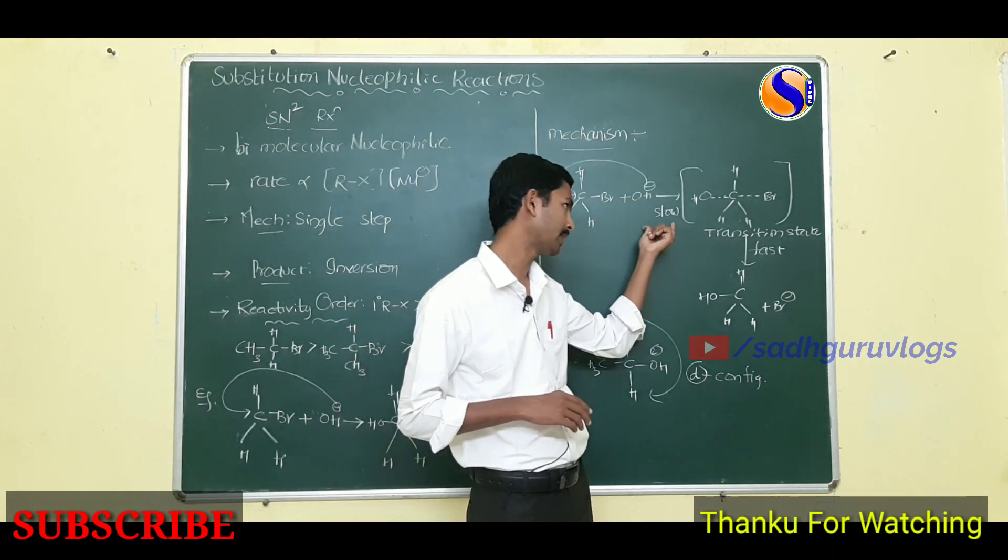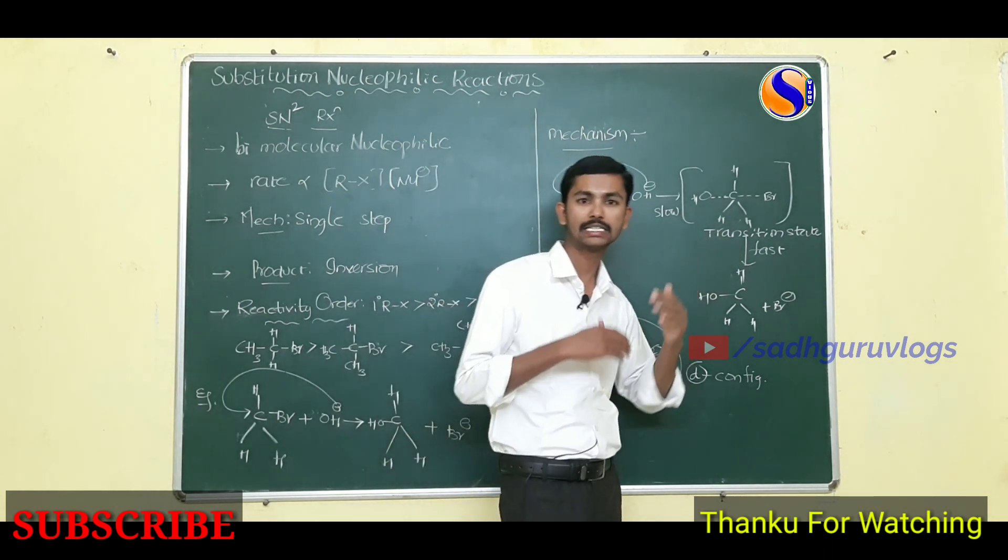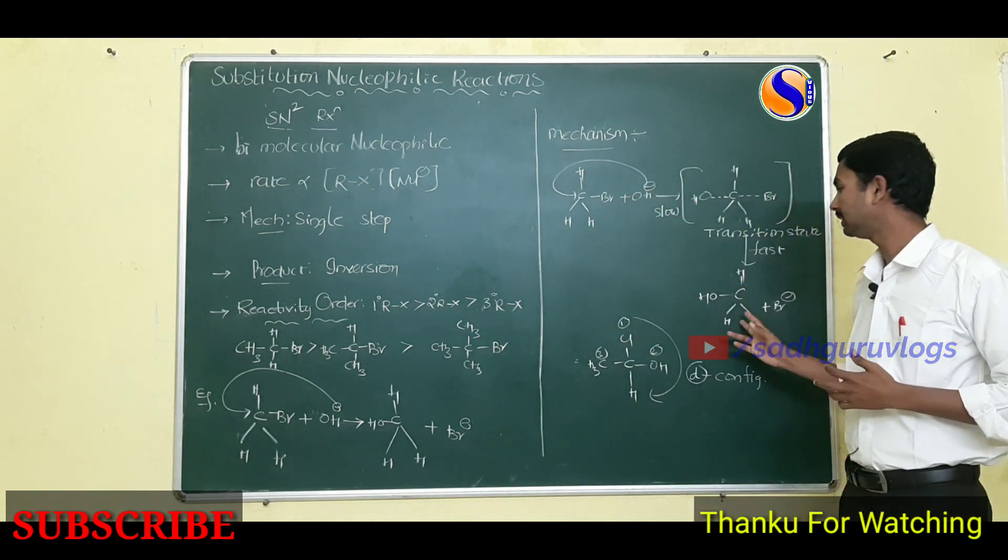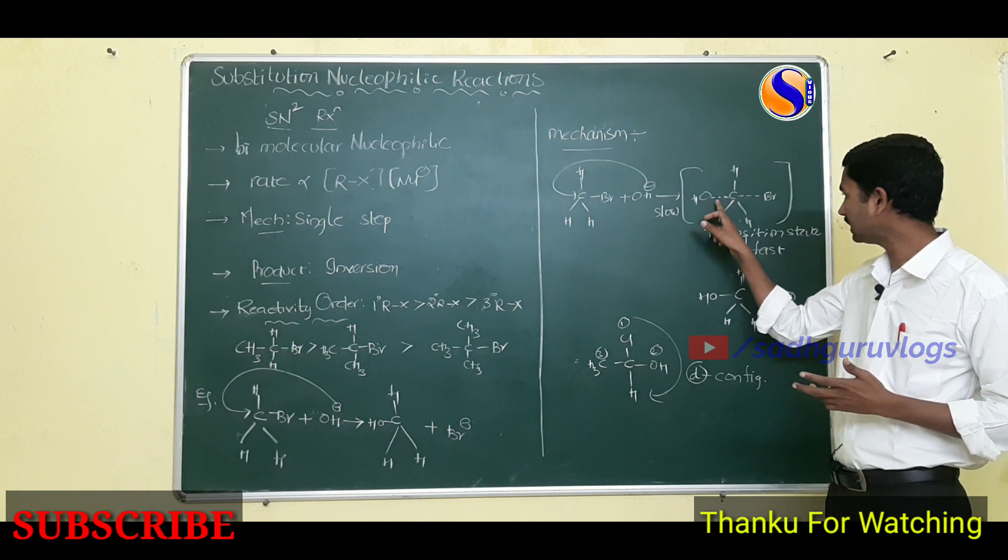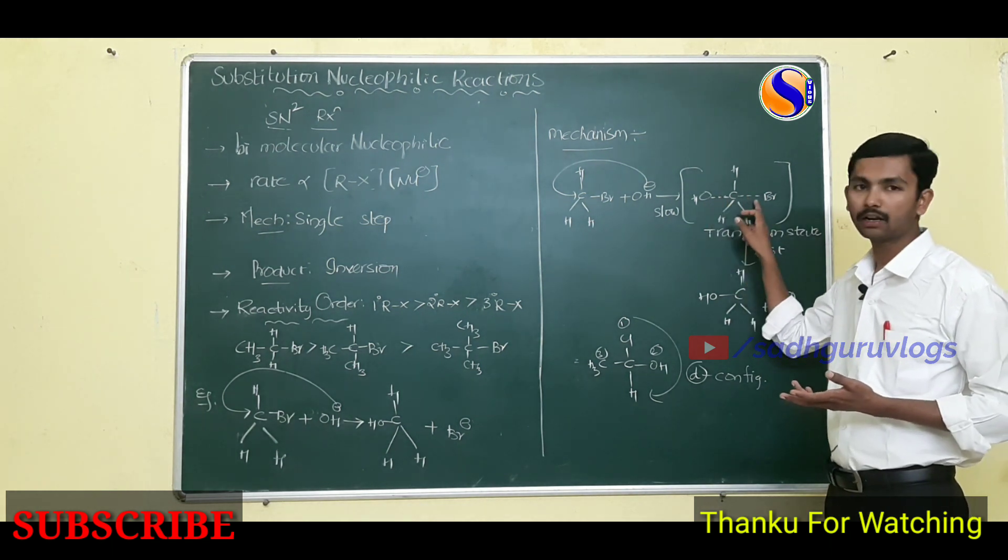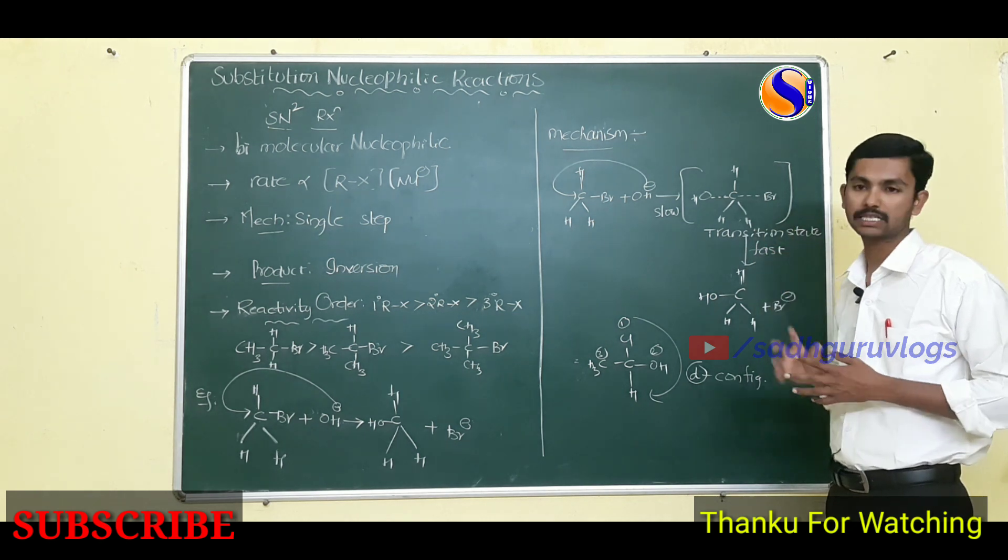The first one is slow step. After formation of transition state, the rate of reaction increases and forms methyl alcohol. Here bond is formed, leaving group bond is weakening. Strengthening of bond here, weakening of the bond in the transition state.